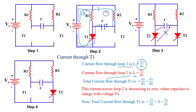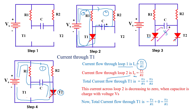Now we apply a gate triggering pulse to T2 thyristor and T2 gets turned on, behaving like a closed switch. Current flows through T2 via two loops. Loop 1: supply voltage → R2 → T2 → back to supply. Loop 2: supply voltage → R1 → capacitor → T2 → back to supply.